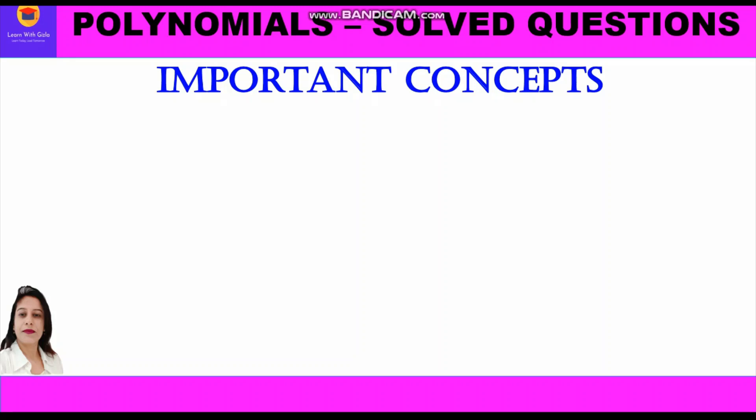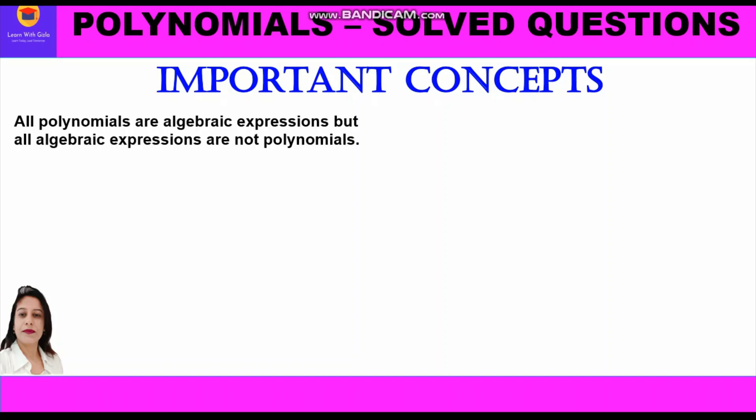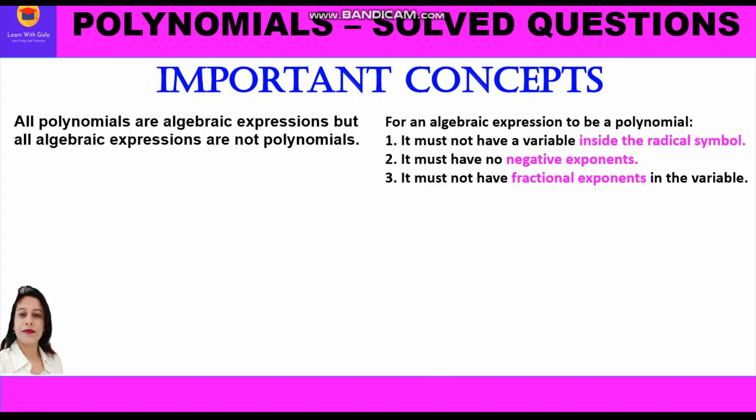Before starting with the questions, let us first recapitulate some important concepts related to polynomials which we have already discussed in a previous video. The first point is the difference between algebraic expressions and polynomials. All polynomials are algebraic expressions, but all algebraic expressions are not polynomials. For an algebraic expression to be a polynomial, it must not have a variable inside the radical symbol, it must not have a negative exponent, and it must not have a fractional exponent in the variable.